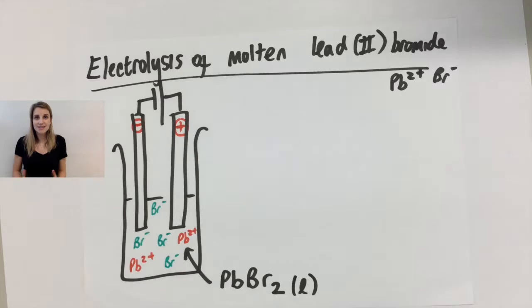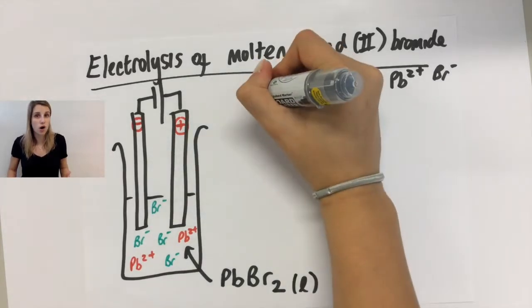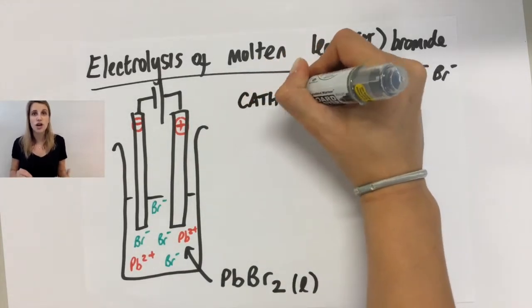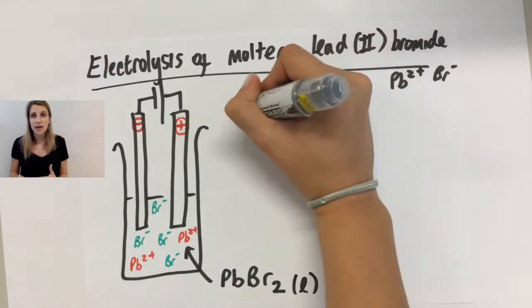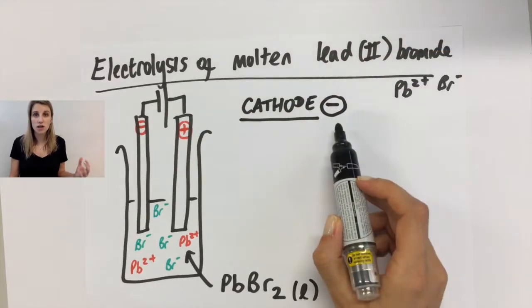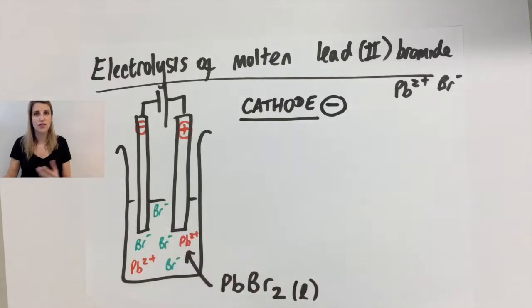So the kind of things that you might be asked is what's going on at the cathode and anode and what is produced there. Now in the definition that we came across earlier, you might remember that electrolysis normally produces simpler substances, which is normally the element rather than the ion.